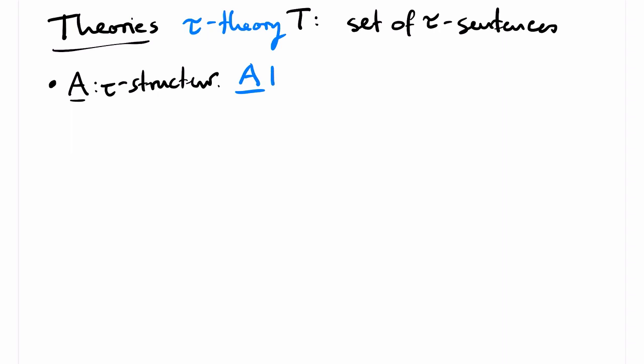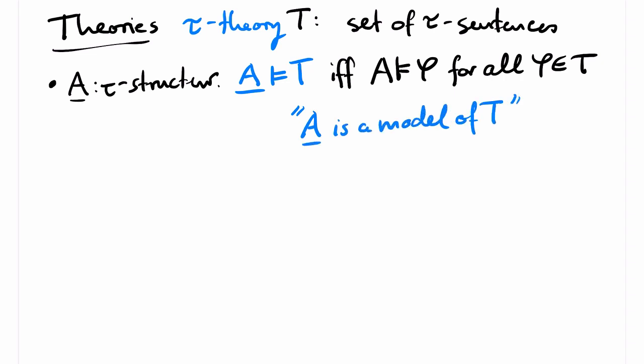And here comes the final definition for today. Theories. A tau theory is simply a set of tau sentences. A structure A with the signature tau satisfies a tau theory T if A satisfies all sentences in T. In this case, we also say that A is a model of T. The point here is that this set can be infinite. So theories offer the possibility of infinite conjunctions. Note that formulas and sentences must always have finite length, but theories can be infinite. A theory is called satisfiable if it has a model.